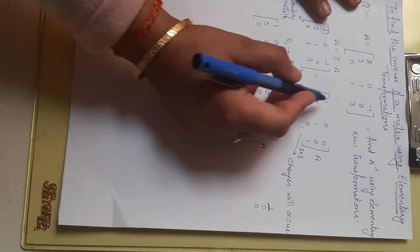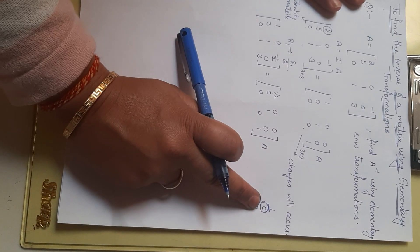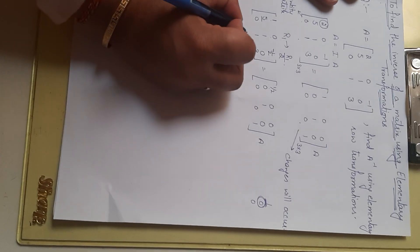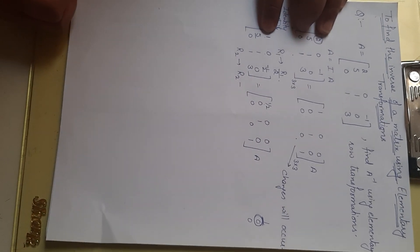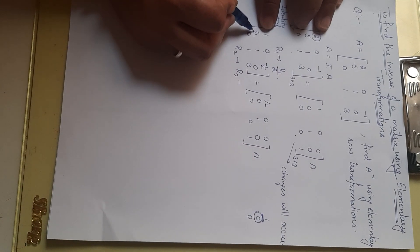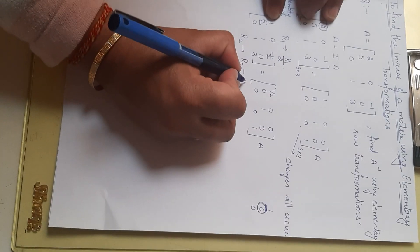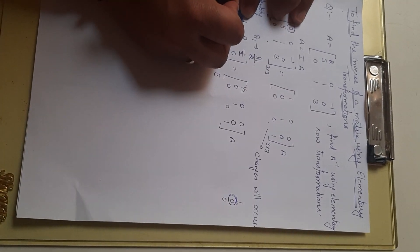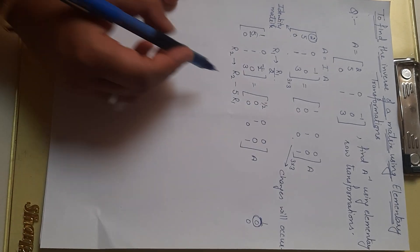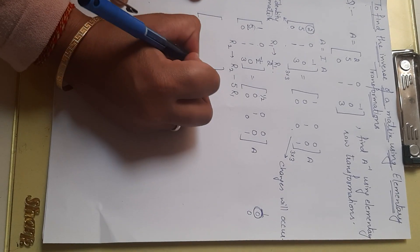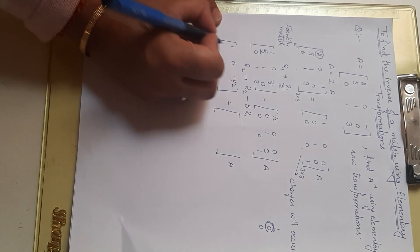Now we need to change the 5 in row 2 to zero. We operate on R2: R2 minus 5×R1. Since 5×1=5, then 5-5=0. So the operation is R2 = R2 - 5R1. Row 1 and row 3 will remain the same; only row 2 will change.